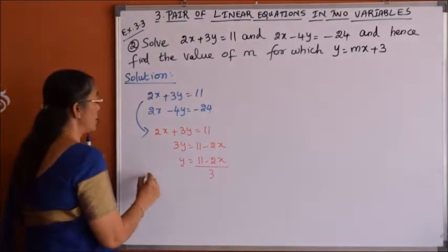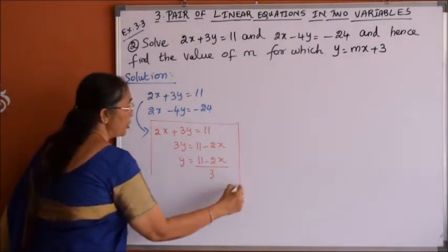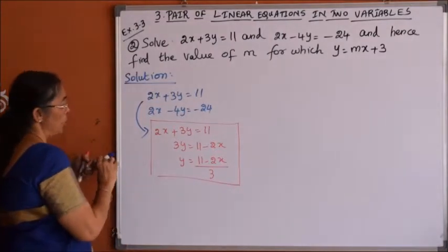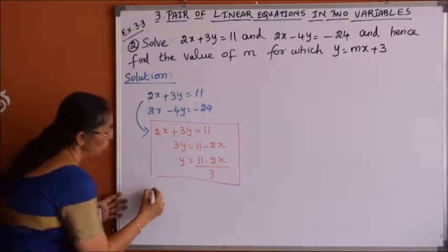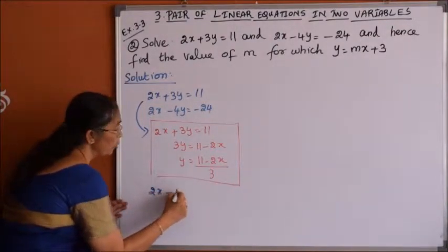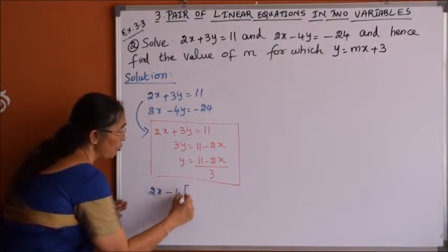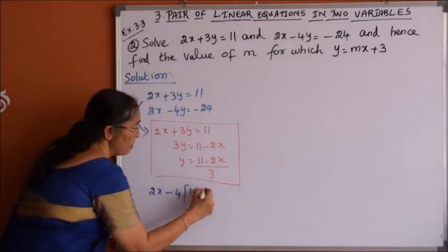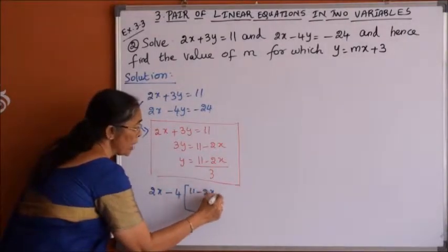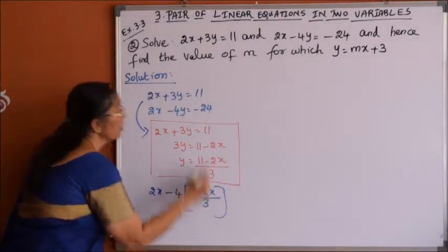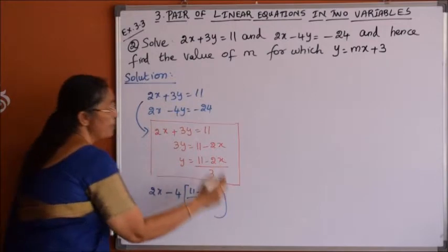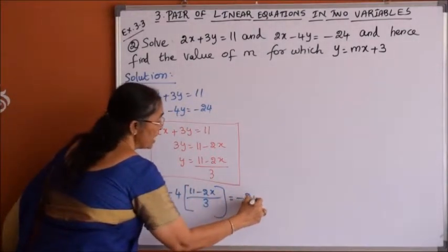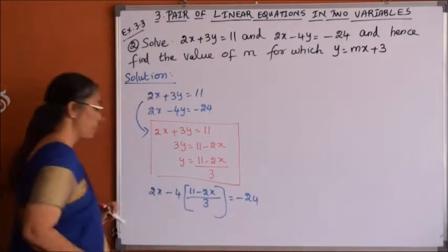We substitute this y value in the second equation. So 2x minus 4 times y, where y is 11 minus 2x divided by 3, equals minus 24.